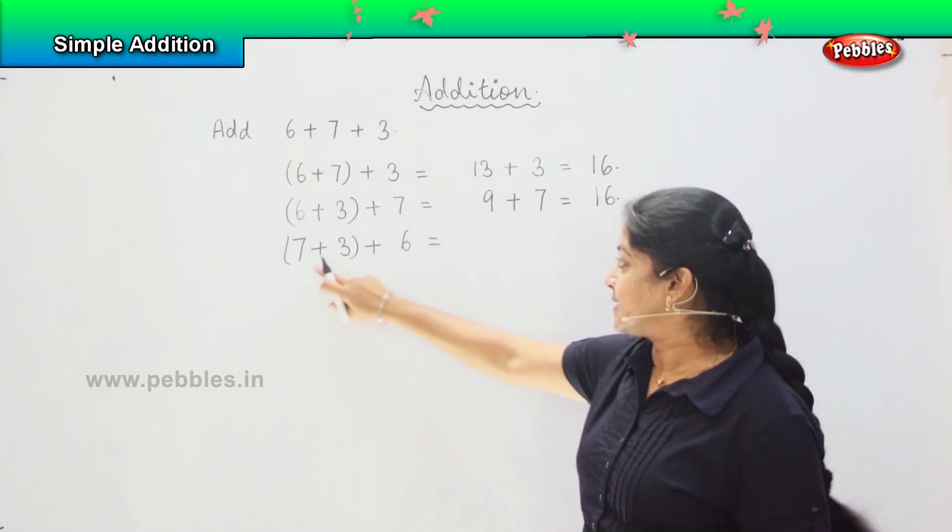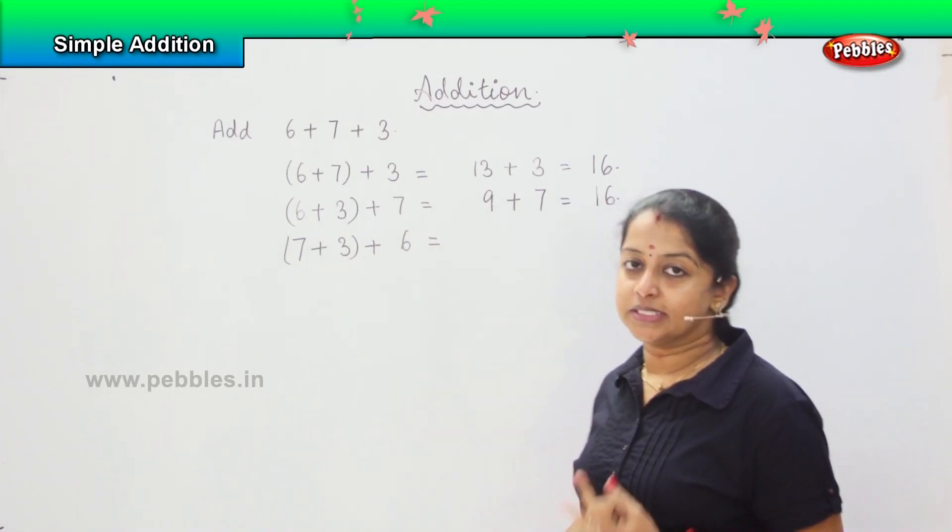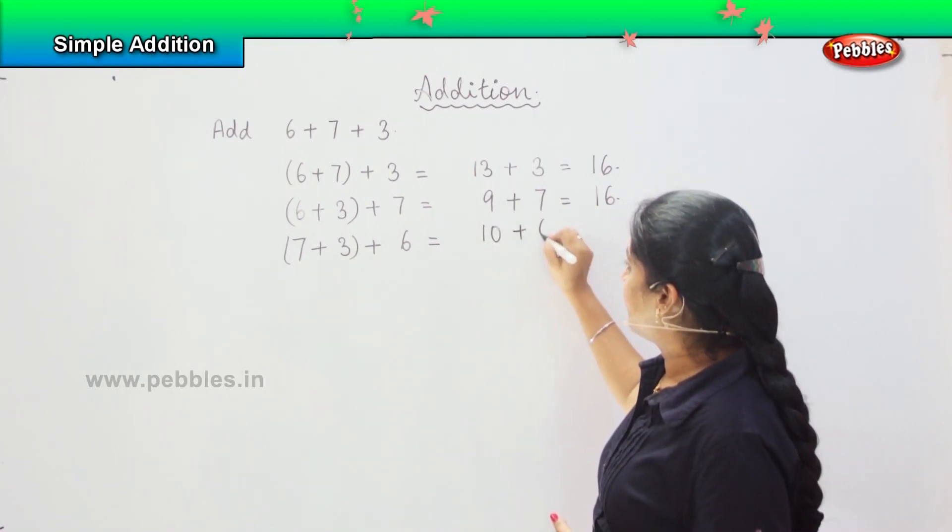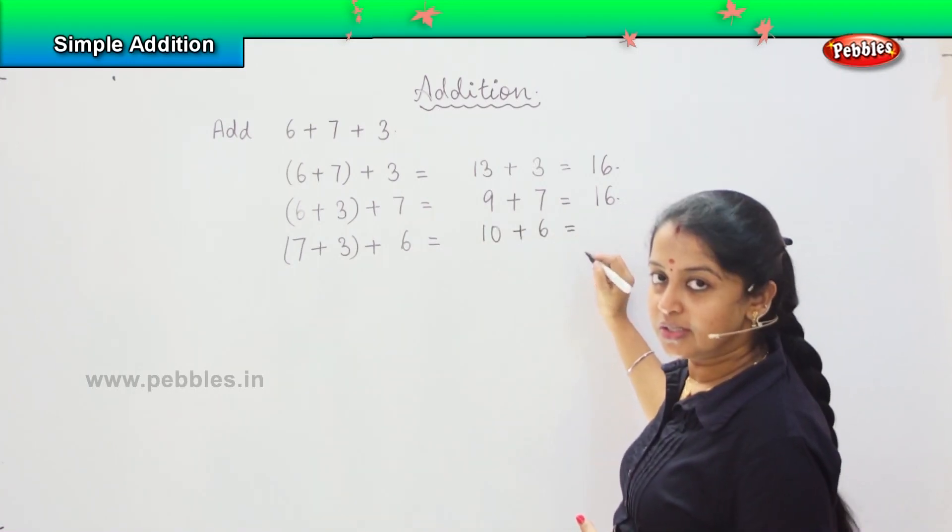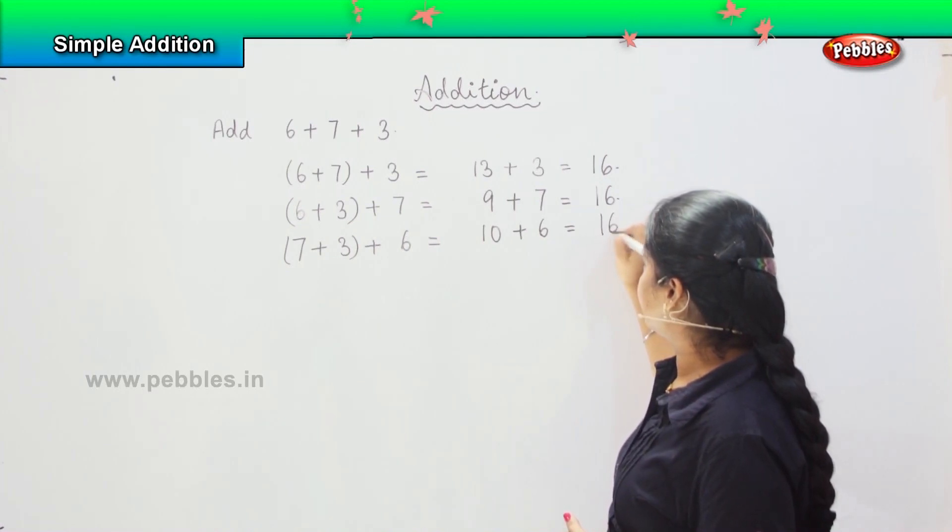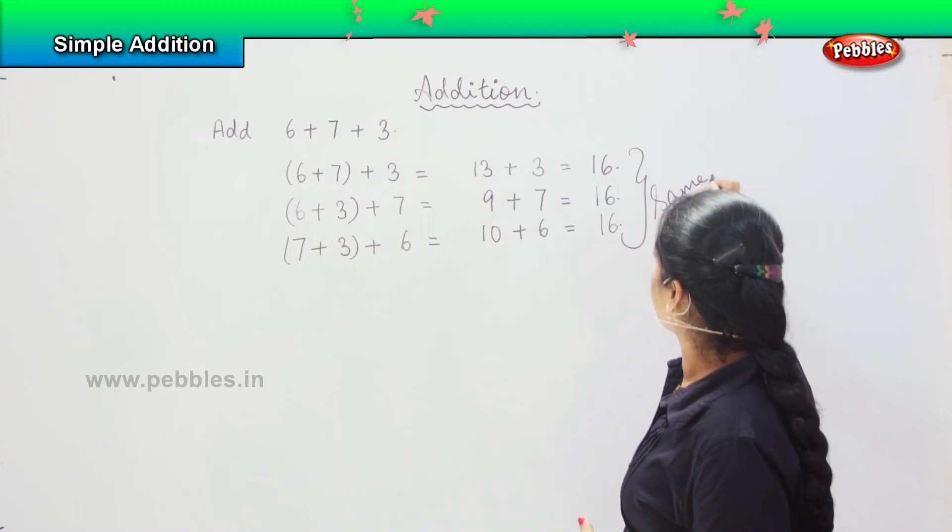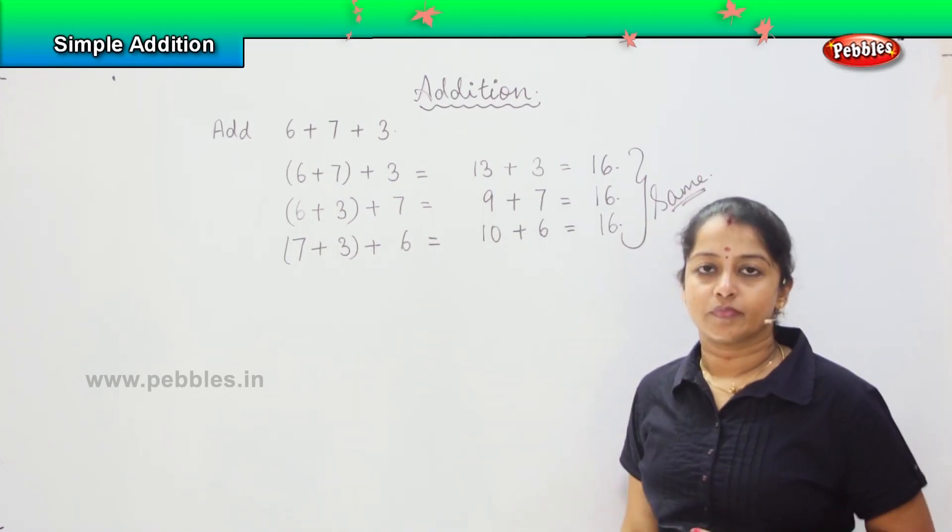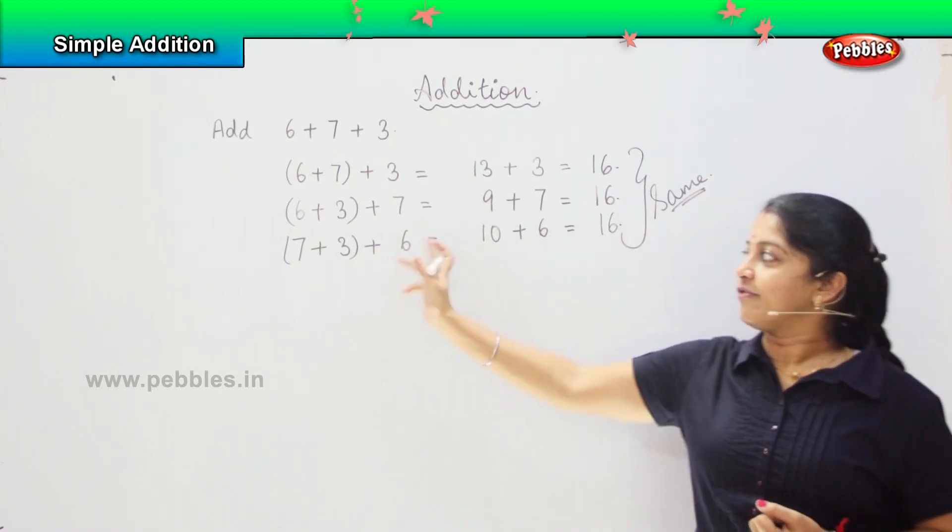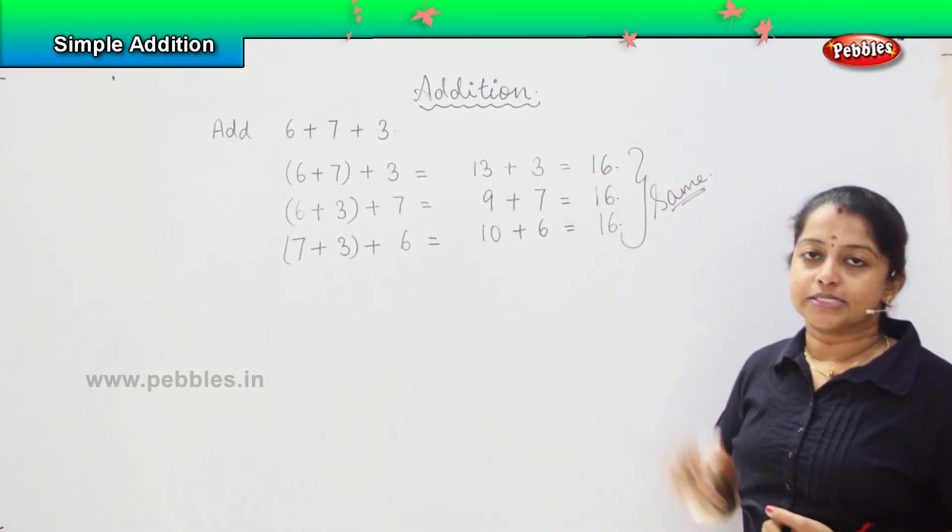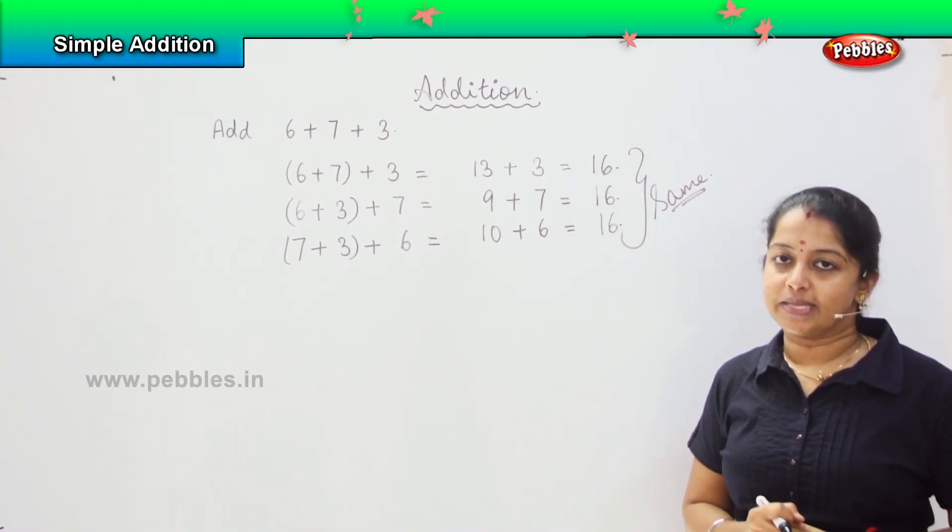The third one, 7 plus 3: 8, 9 and 10. 10 plus 6 is how much? It's 16. So in all the three cases my answer is the same. Did you see, in whichever form I shuffle the number, by end of the day my answer is the same. My sum is same.